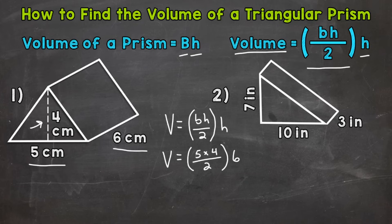Let's solve. 5 times 4 is 20, divided by 2 is 10. So that's the area of our triangular base. 10 times 6 gives us 60. So volume equals 60 cubic centimeters.